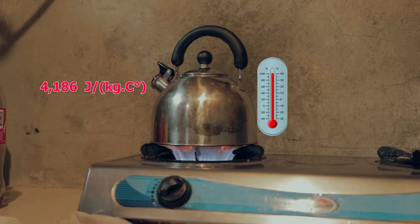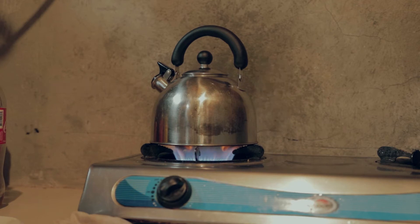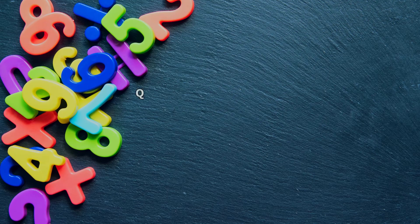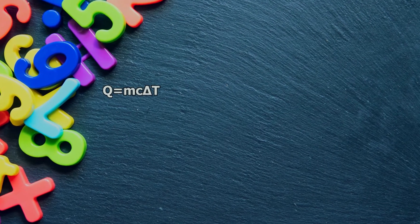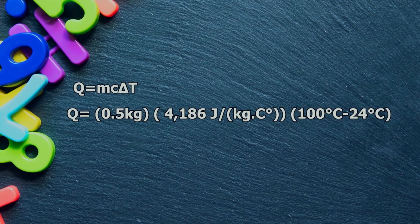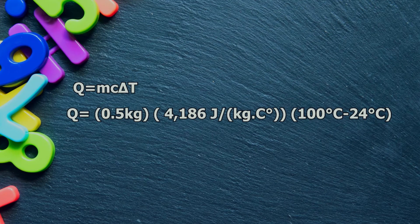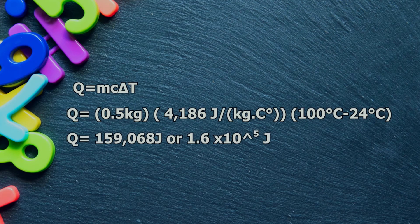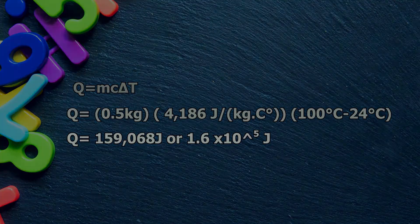To determine the energy needed to boil the water, we compute for the heat transferred by the fire to the water using the formula Q, which is the amount of energy, is equal to M, the mass of the substance, times C, the specific heat capacity of the substance, times delta T, which is the change in temperature. By solving the given values, we obtain 159,068 joules, or 1.6 times 10 raised to the fifth power joules, which is needed to boil the water.